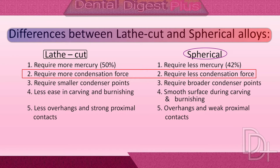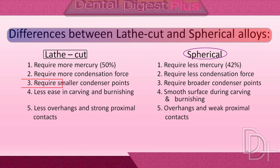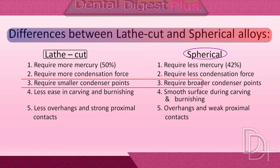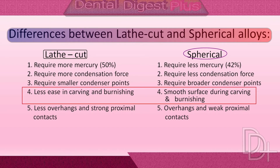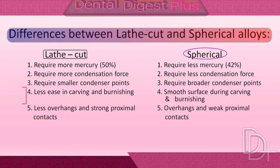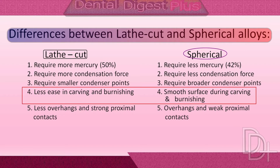Higher condensation pressure is required to minimize porosity and to express mercury from lathe-cut amalgam, which can give higher compressive strength to the set amalgam. For applying more condensation force, a smaller condenser point is required for lath-cut alloy, because a smaller diameter condenser applies more pressure than a larger diameter condenser. In lath-cut alloy, more effort is required for achieving smooth carving surfaces because of the irregular shape of the particles, whereas in spherical alloy it is easier to do carving and burnishing.